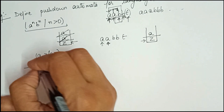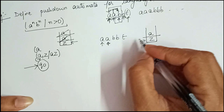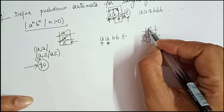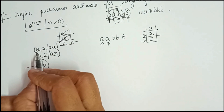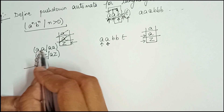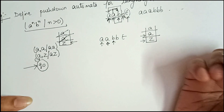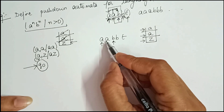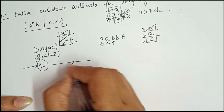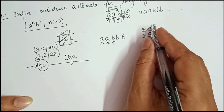For the second 'a': input symbol is 'a', top of stack is 'a', so we push this 'a' into the stack, denoted as a, a → aa. When we encounter 'b': the input symbol is 'b', top of stack is 'a', so for every 'b' we pop one 'a'. We denote this as b, a → ε.